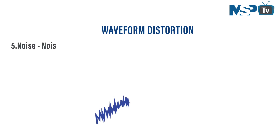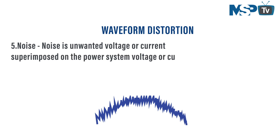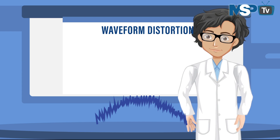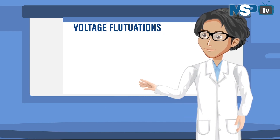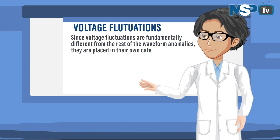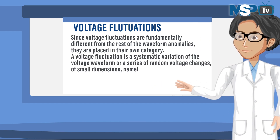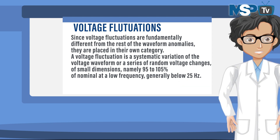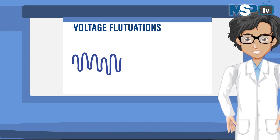The fifth subtype is noise: unwanted voltage or current superimposed on the power system waveform. Noise can be generated by power electronic devices, control circuits, arc welders, switching power supplies, radio transmitters, and so on. The sixth type of power problem is voltage fluctuations. Since voltage fluctuations are fundamentally different from the other waveform anomalies, they are placed in their own category. A voltage fluctuation is a systematic variation of the voltage waveform or a series of random voltage changes of small magnitude — namely 95 to 105 percent of nominal — at low frequency, generally below 25 Hz.